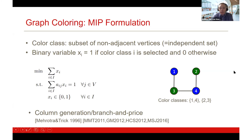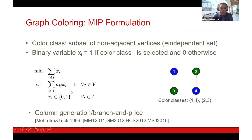For example, in this small graph we have a blue color class and a green color class. These are subsets of vertices that are not adjacent, so they correspond to independent sets. Rather than assigning a color to an individual vertex, the model picks a selection of color classes — which can be exponentially many — so that every vertex belongs to exactly one color class.